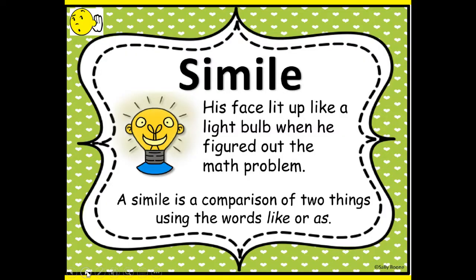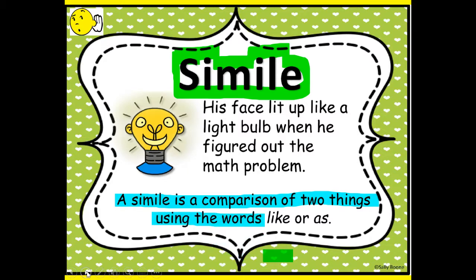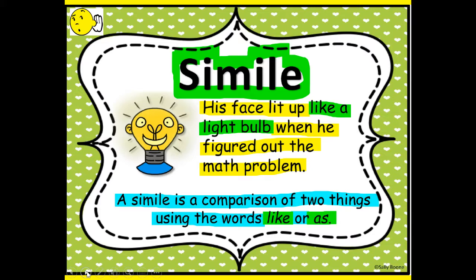One type of figurative language is simile. You don't need to write this, just listen. A simile is a comparison of two things using the words 'like' or 'as.' Here's an example: 'His face lit up like a light bulb when he figured out the math problem.' Was his face a literal light bulb? No — it was like a light bulb.